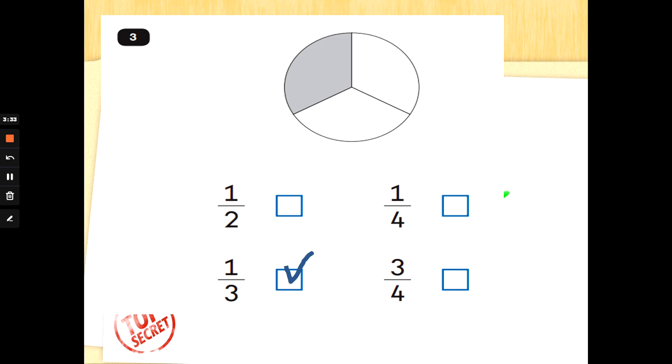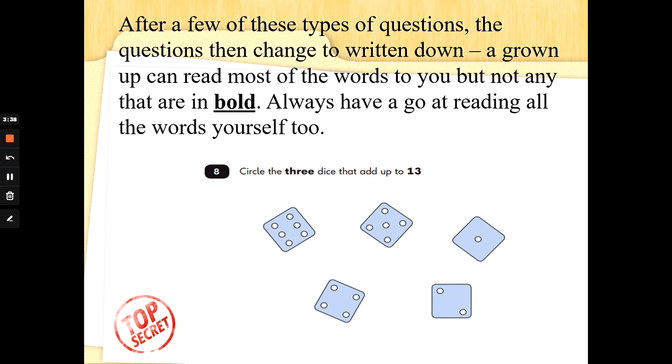The questions that we're going to look at today are all about fractions. After a few types of the questions where the grown-up asks you, you might be asked to read the rest of the sentences on your own. I can read some words to you in the task, but the words that are in bold, that are dark, you will need to try and read yourself. Bold just means where the writing looks different.